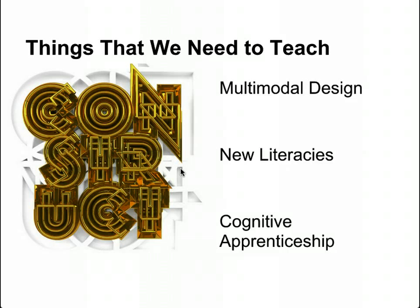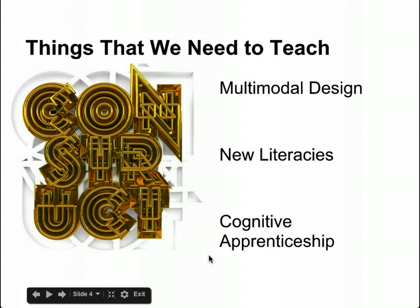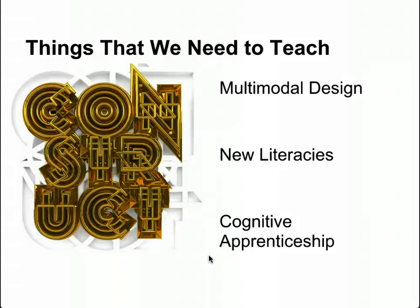One other important element of cognitive apprenticeship that I don't want to gloss over is the reflective part. There's a term called abstracted replay — it's a way for students, as they are working and when they are finished, to take a look at not just the work product but also, probably more importantly, the work process. They talk about what they thought, what they did, what they could do better next time they were to make a website or write a blog post — what they learned and how they can share that with others.